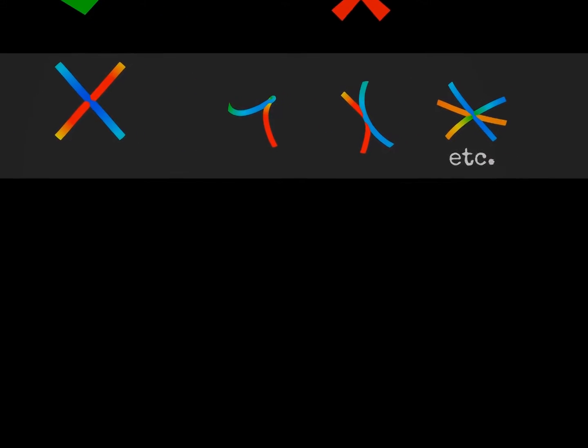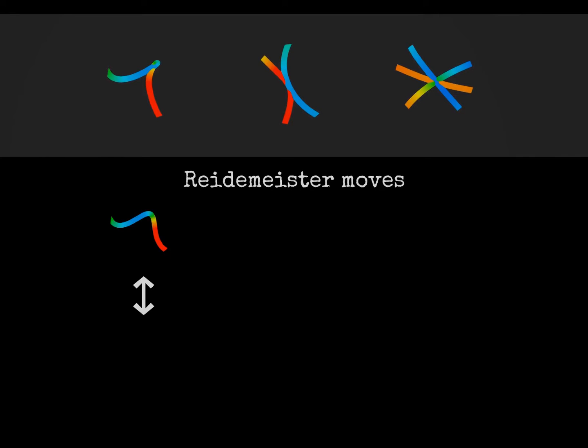Recall what we know about knot diagrams. We need to use crossings to describe knots, while we can avoid all other singularities in the projections. From the simplest singularities we can derive the Reidemeister moves. There are two ways of resolving its singularity to get a legitimate diagram. These two ways are the sides of the move.